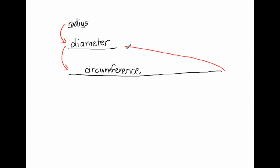A flowchart shows you the relationships between certain parts. So if I'm given the radius and I'm being asked to find what the diameter is, all I'm going to do is multiply the radius by 2 to get the diameter. And if I'm given the diameter, I'm doing the inverse operation — so I'm going to divide it by 2 to find the radius. For example, if the radius equals 5 centimeters, I'm going to multiply it by 2 to get a diameter of 10 centimeters.